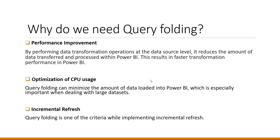The data is transferred from the source to in-memory. When query folding is enabled on a particular table, it will directly process the data from the data source, making interaction faster and enhancing performance. The second benefit is optimization of CPU usage — when query folding is enabled, the data is not stored in-memory but is directly processed from the data source.